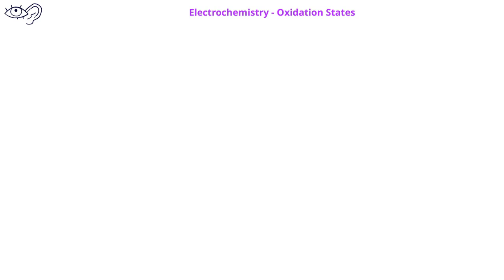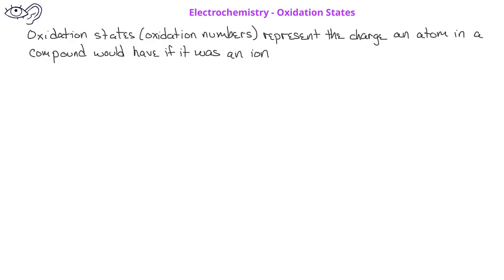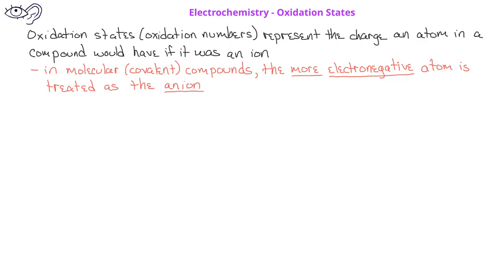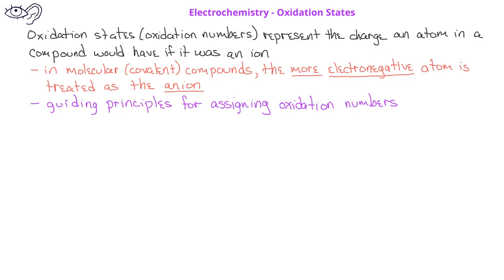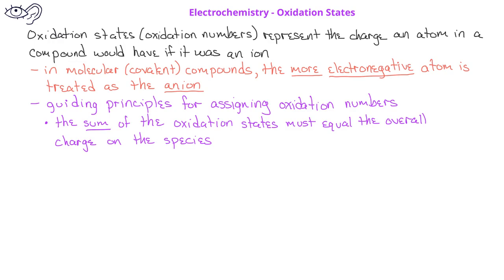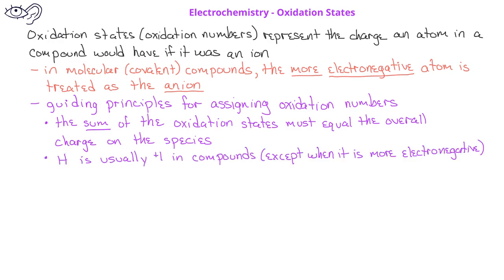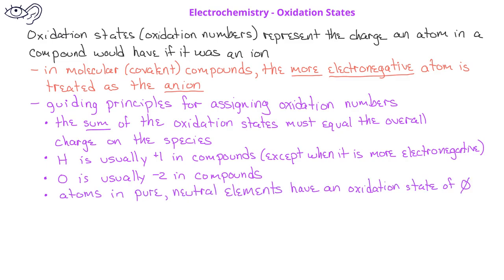Oxidation states, or oxidation numbers, represent the charge an atom in a compound would have if it was an ion. In molecular or covalent compounds, the more electronegative atom is treated as the anion. We can provide some guiding principles to identify oxidation states. The sum of the oxidation numbers in a compound must equal the total charge on the overall species. Hydrogen will generally have an oxidation state of plus one, unless it is the more electronegative atom, such as in sodium hydride. Oxygen usually has an oxidation state of minus two. Atoms in pure neutral elements have oxidation numbers of zero.